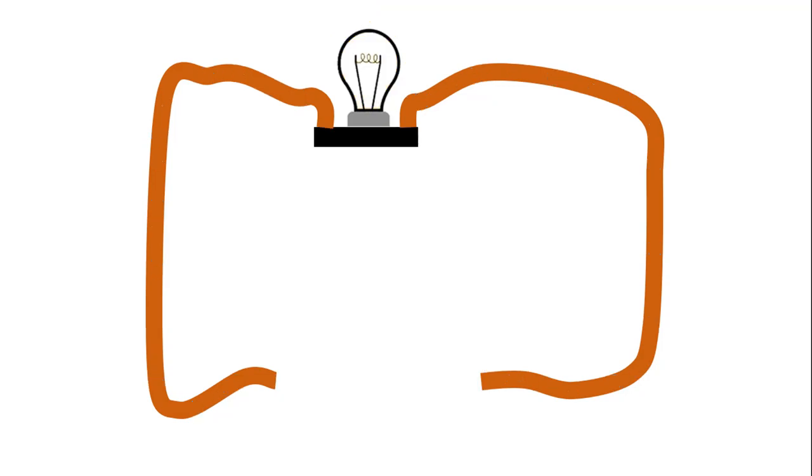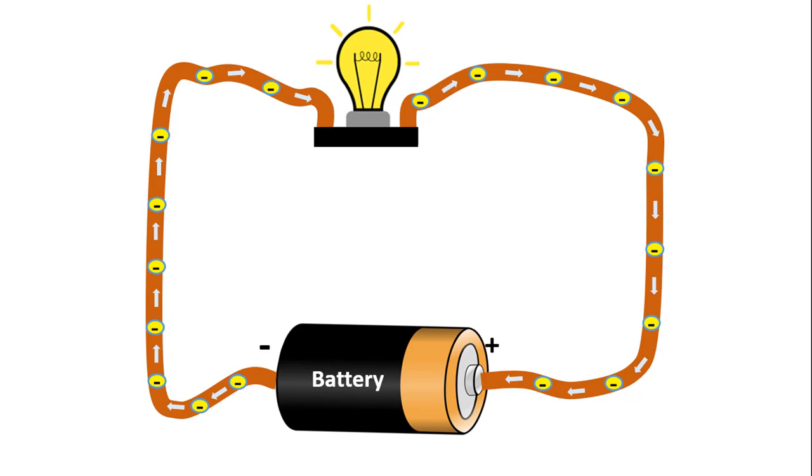We can then place charges like lamps in the path of these moving electrons, so electrons pass through them and then they produce energy such as light and heat. To do this, we need to force the electrons to move. Here, we can do this by applying a voltage.